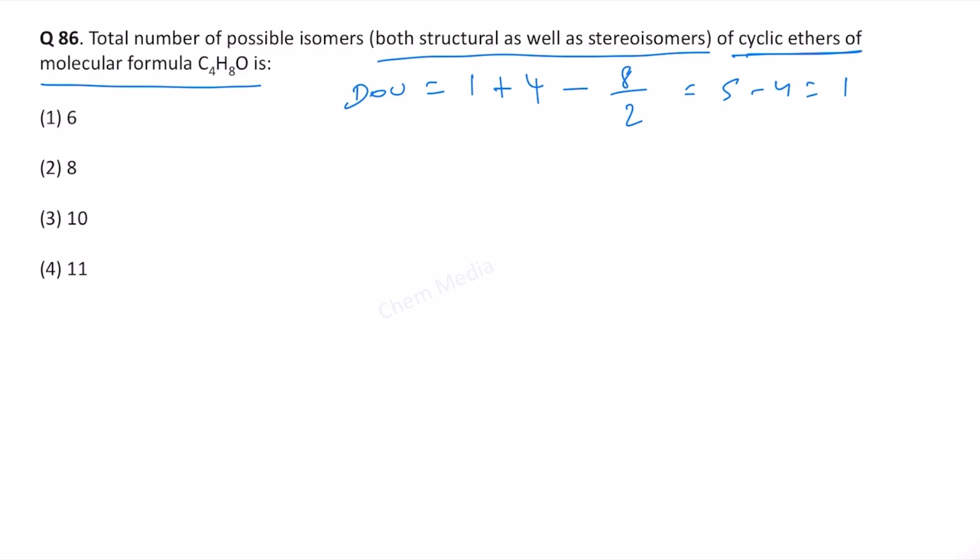So let us write all the cyclic ethers. This is definitely one of the tricky questions. Number one, we can definitely write tetrahydrofuran that is one isomer.